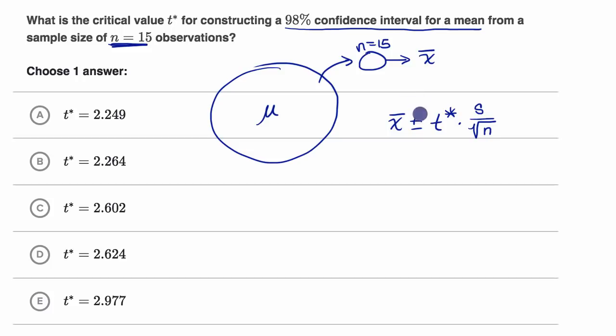But what they're asking us is, well, what is the appropriate critical value? What is the T star that we should use in this situation?